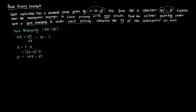That gives us our marginal revenue function, so we equate it to marginal cost: MR = MC means 20 minus 2Q equals 2. Then 2Q equals 18, and dividing both sides by 2, Q* equals 9.